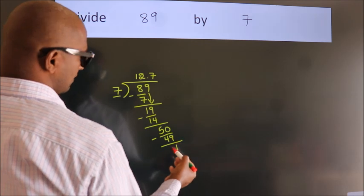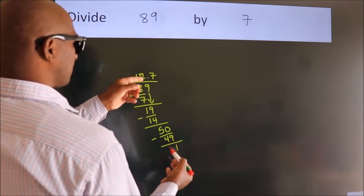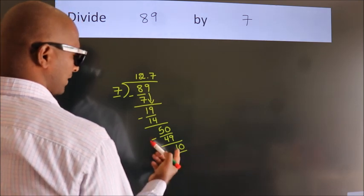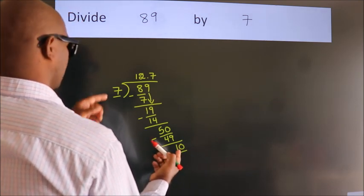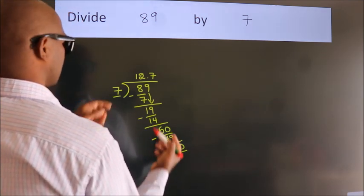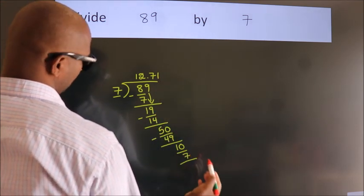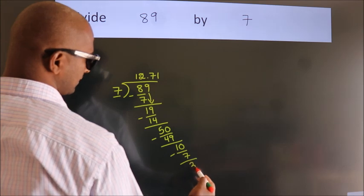After this, we already have the decimal. So directly take 0. So 10. A number close to 10 in 7 table is 7, 1s, 7. Now, we subtract. We get 3.